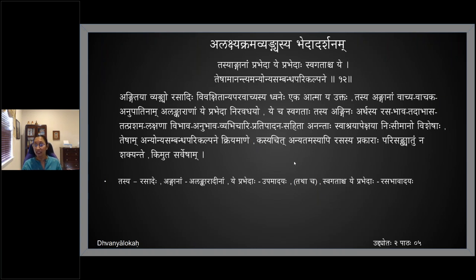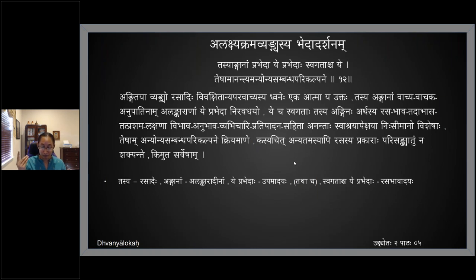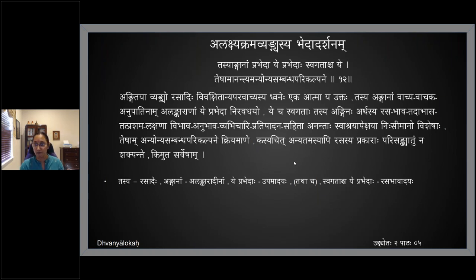Niravadhaya — next is swagata pravedaha. Tasya anginaha arthasya rasa bhava tadbhasa tad prashama lakshanaha — so you can have rasadvani, bhavadvani, rasabhasadvani, bhavabhasadvani. Each rasa can be shringara, hasya, karuna, veera, and bhavadvani means you can have the eight or nine sthai bhavas including 33 vyabhichari bhavas — any of those can be suggested as dhvani. That is also anantyam.